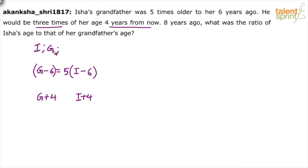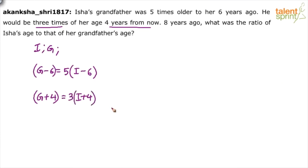Present ages are G and I. Six years ago: G minus six, I minus six. Four years from now: G plus four, I plus four. And the grandfather would be three times Isha's age four years from now — so G plus four equals three times I plus four.